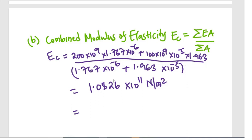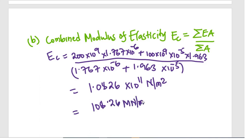The denominator is the total cross-sectional area: the four brass wires give 1.963 × 10⁻⁵ m², and the steel wire gives 1.767 × 10⁻⁶ m². Dividing the numerator by this total area gives 1.0826 × 10¹¹ N/m², which is the combined modulus of elasticity EC, approximately 108.26 GPa.